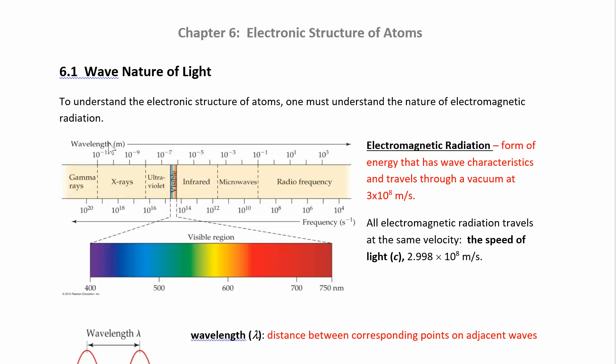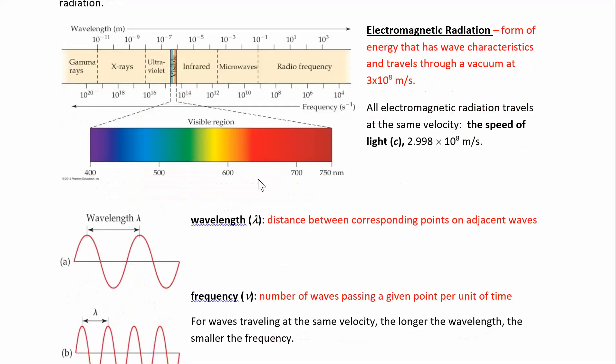They all have different wavelengths. So what do we mean by a wavelength? Wavelength is the distance between corresponding points and adjacent waves. So if we look at a wave in this picture here, the wavelength is from like the peak to the peak, or you can measure it from trough to trough. It's the distance between those two points.